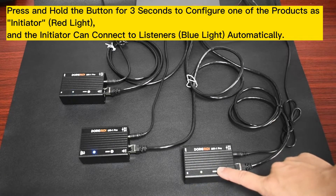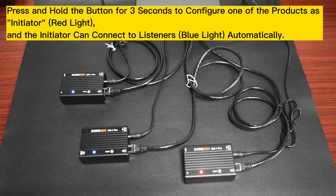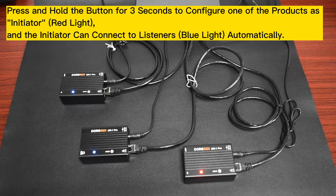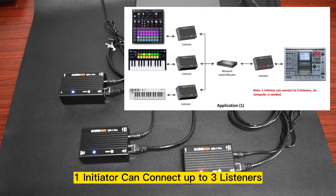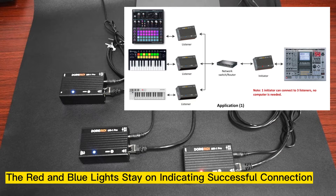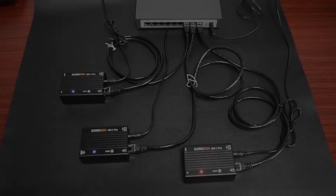Press and hold the button for three seconds to configure one of the products as an initiator, indicated by a red light. The initiator can connect to listeners, indicated by blue lights, automatically. One initiator can connect up to three listeners. The red and blue lights staying on indicate a successful connection.